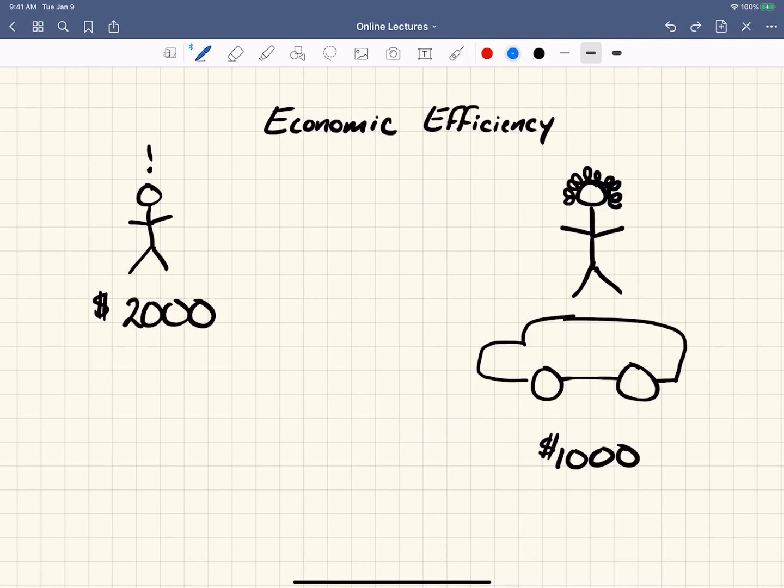Now, she has it listed for a lot more than $1,000, because it's a nice car, and it's been blue-booked for $3,000. And so even though she'd be willing to take as low as $1,000, you don't know that, and she's not advertising that. She knows it's blue-booked at $3,000, and so she lists it.